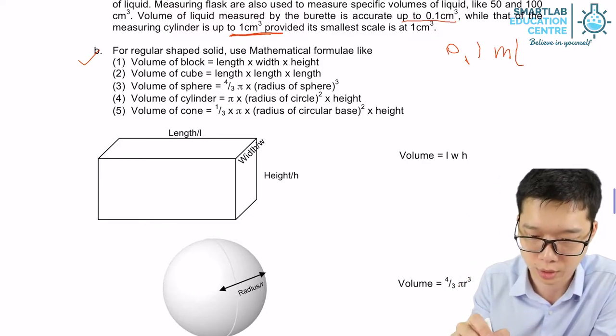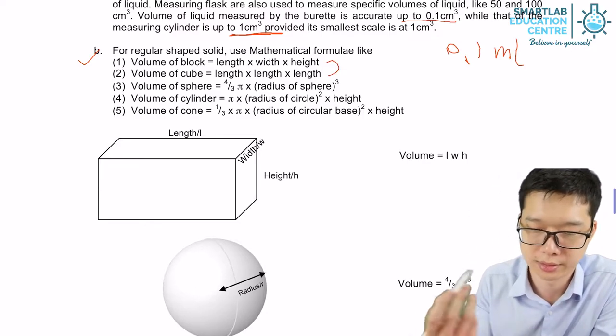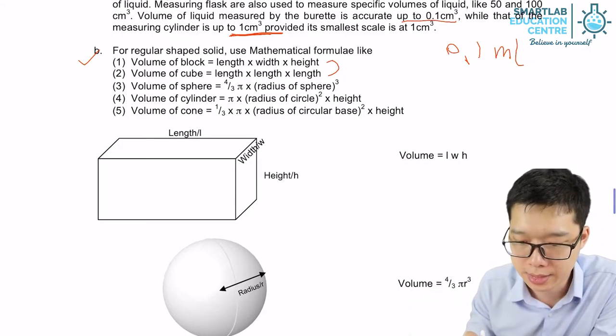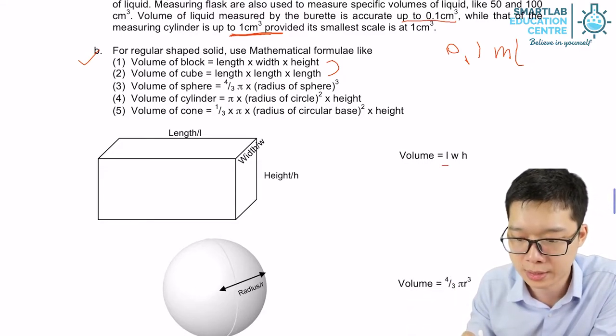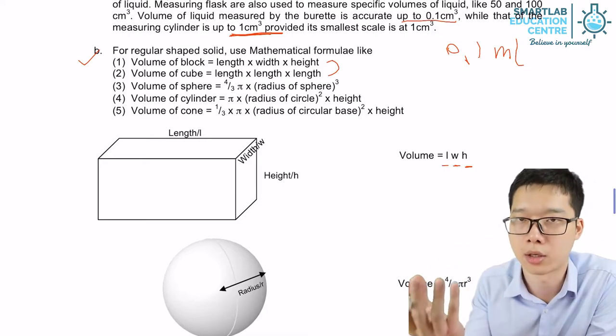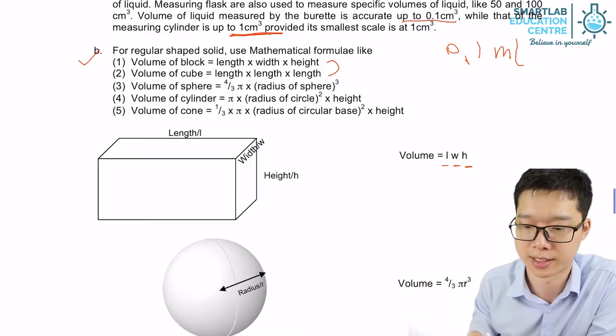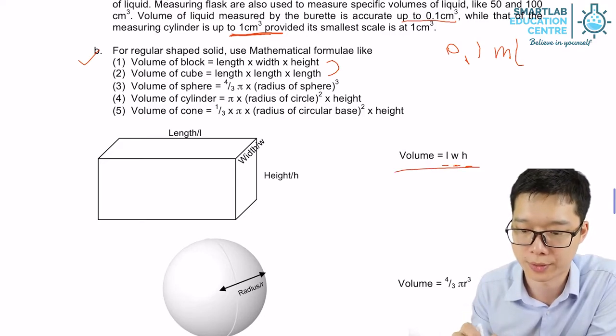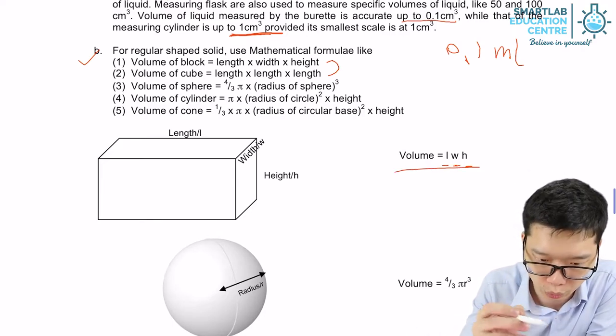For block or tube, they are actually the same. It's length times width times height. But for cube, they are all just the same number, but still you're applying the same formula: length times width times height. So that's for block or cube.